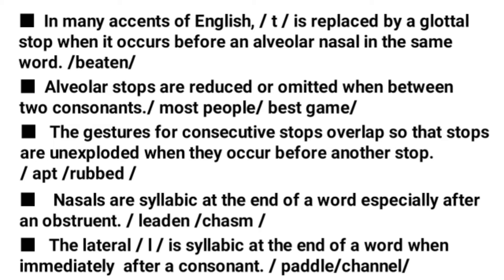The third point is that the gestures for consecutive stops overlap, so that stops are unexploded when they occur before another stop. That means when two stop sounds come together, the first stop sound doesn't have full explosion — which is the criteria for plosive consonants. Consider these two examples: 'apt' and 'rubbed'.